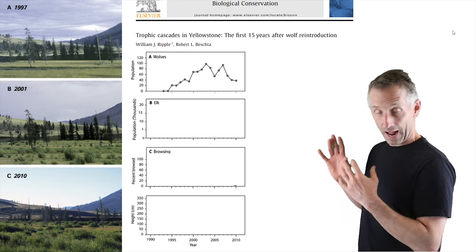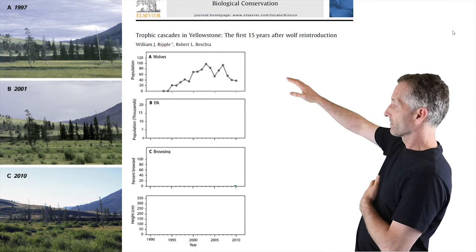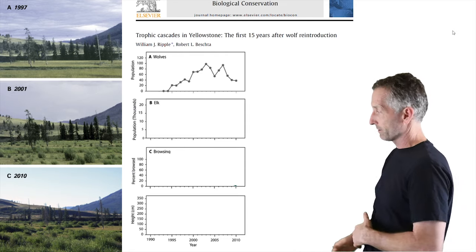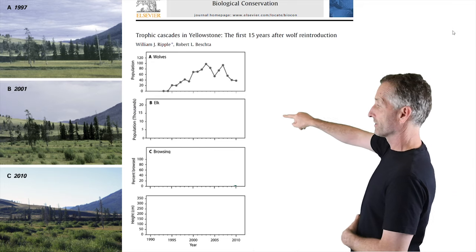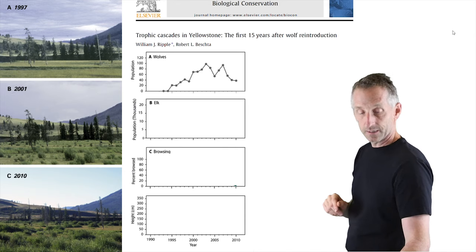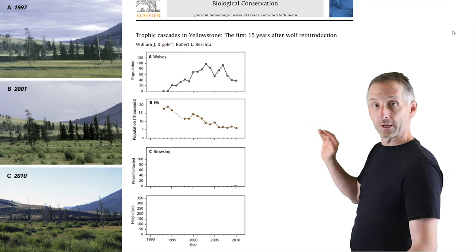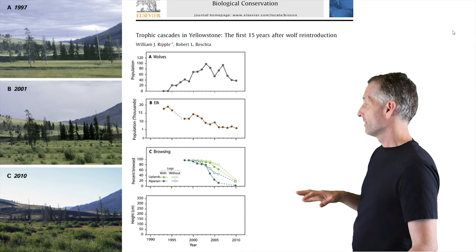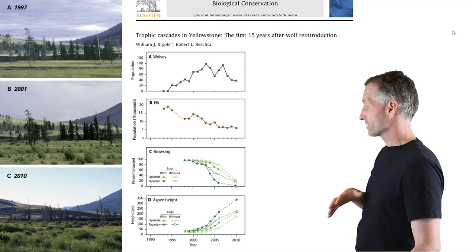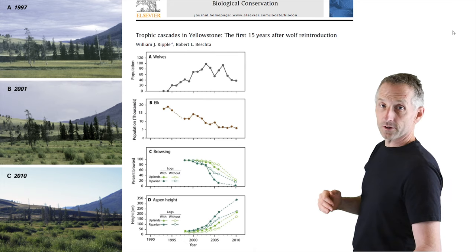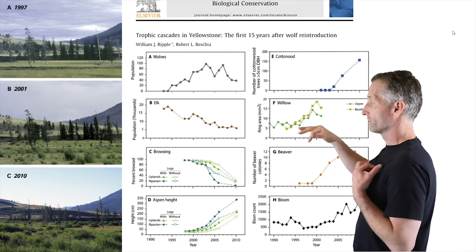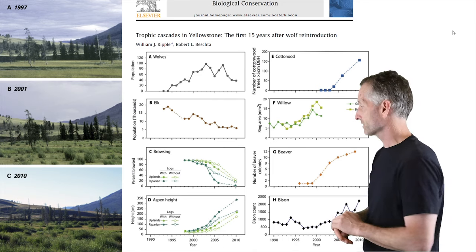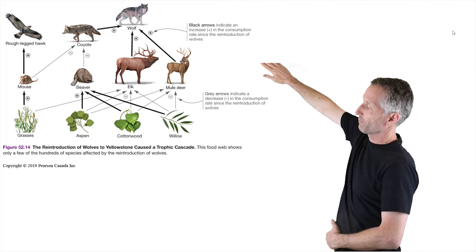Wolves were added back into the Yellowstone ecosystem in 1995. Studies looking at how the ecosystem has changed since then show that the wolf population started low, then increased and stabilized. Simultaneously, the populations of elk declined. The degree of browsing that elk had on willows along stream beds went down dramatically, and the height of riparian vegetation went up. Then you have cascading influences: cottonwoods and willows increased around the creeks, and the numbers of beavers increased — beavers were also reintroduced into the system.